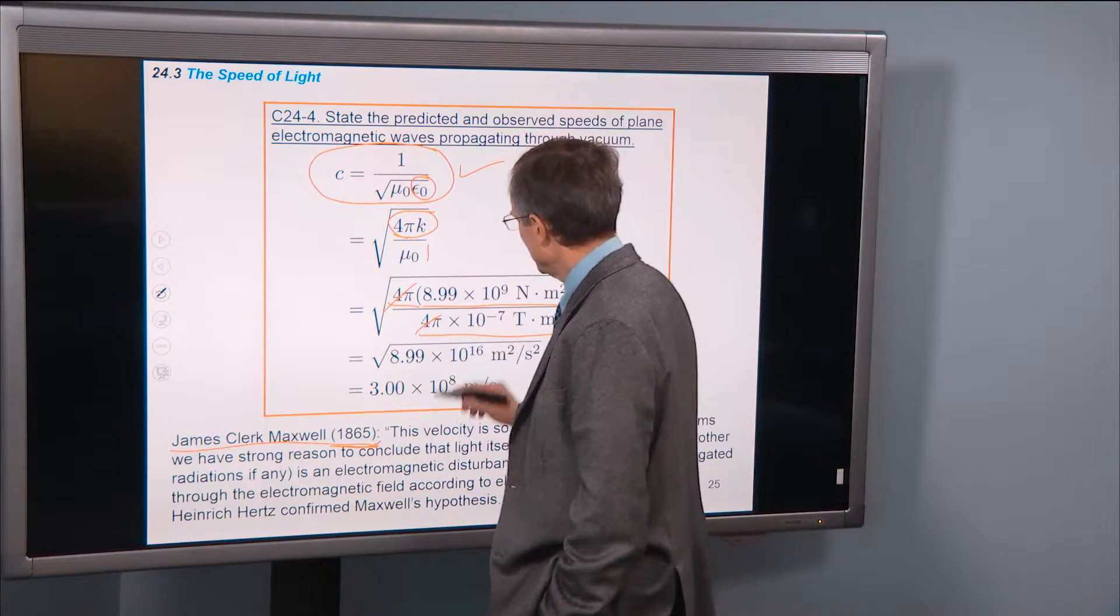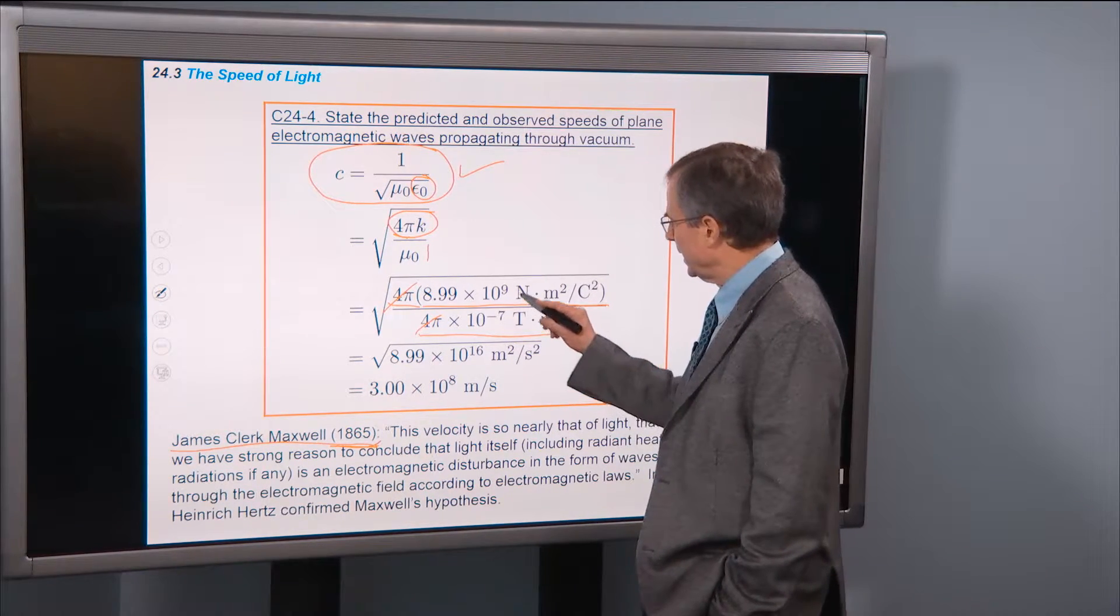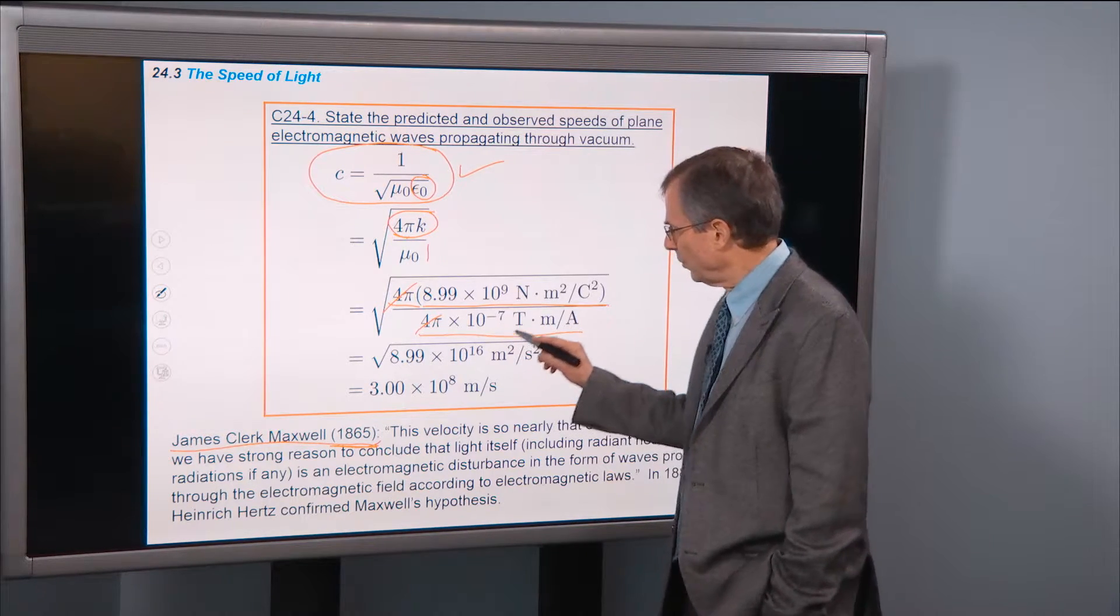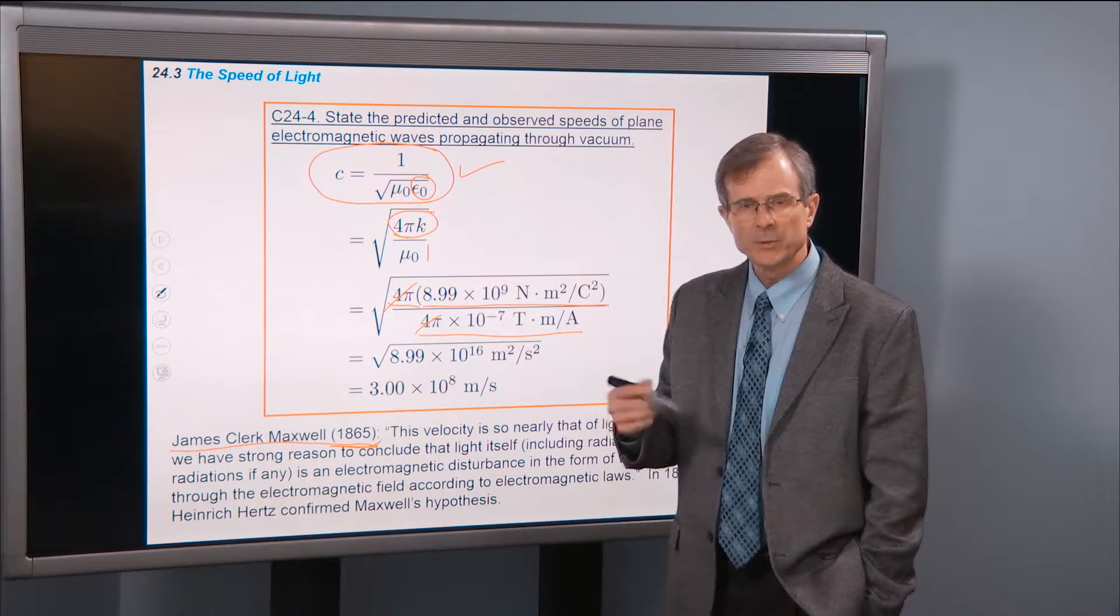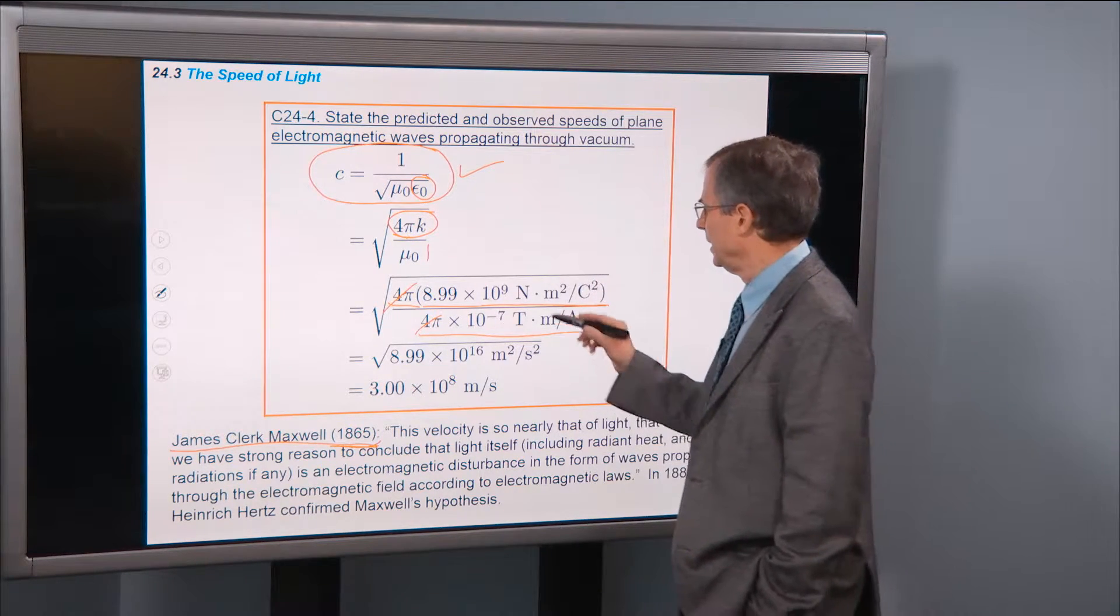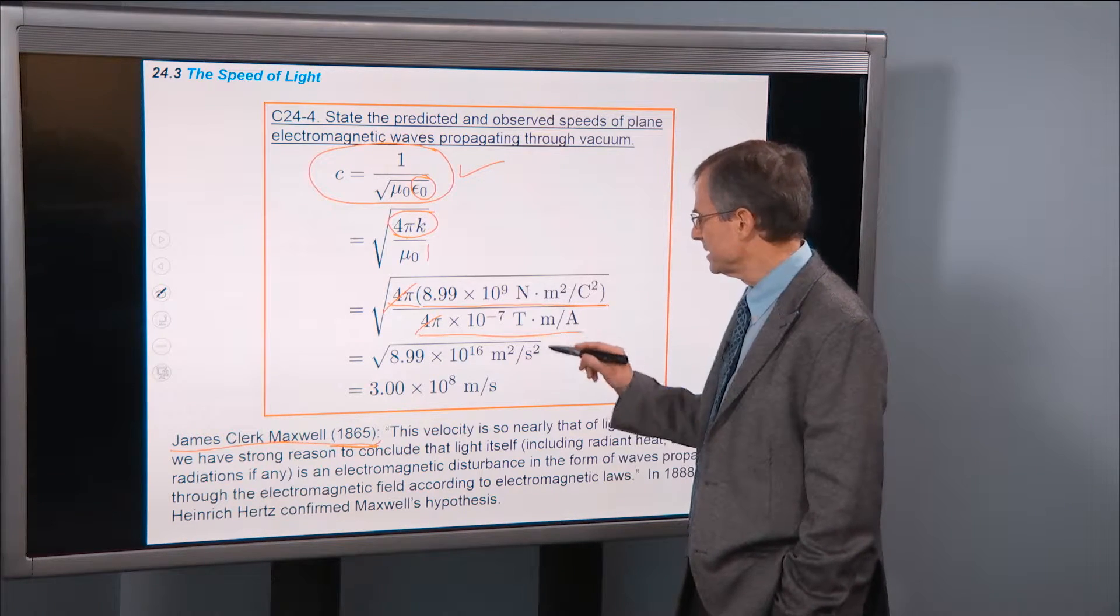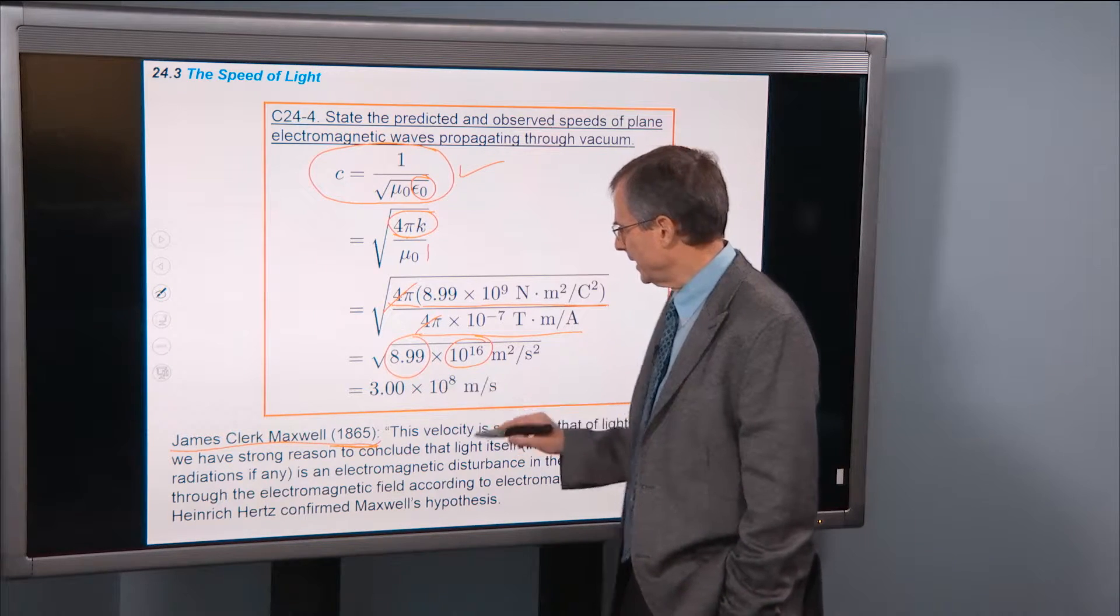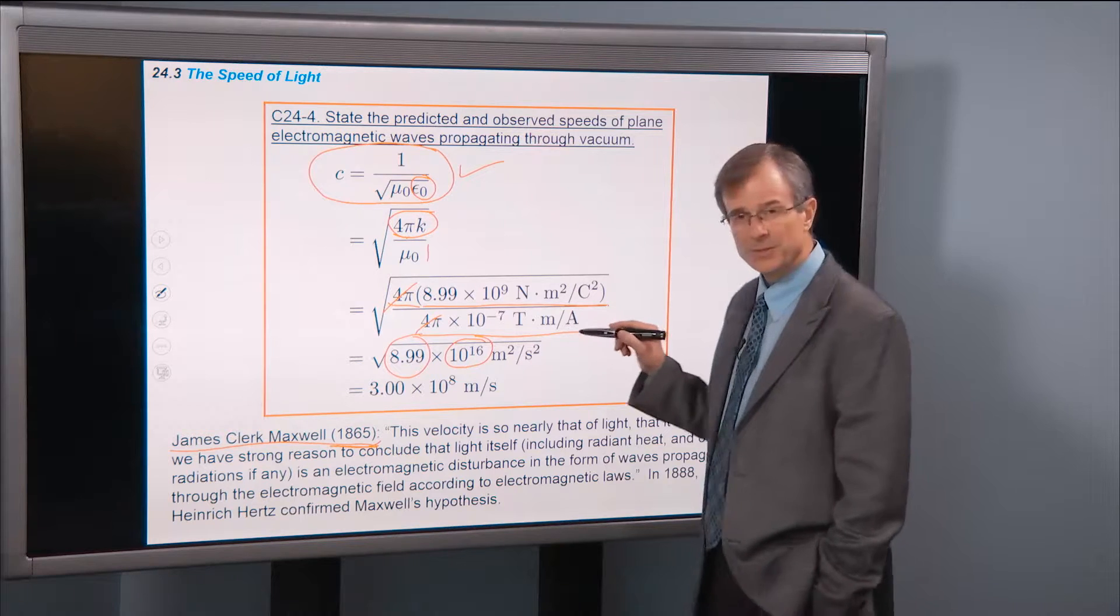The 4πs cancel. We get 8.99, which is about 9. We get 10 to the 9 over 10 to the minus 7. Well, the 10 to the minus 7 in the denominator becomes a 10 to the 7 when you put it up in the numerator. So we'll have a 10 to the 9 plus 7. And that's 10 to the 16. So we've got a number that's around 9, and we've got 10 to the 16.